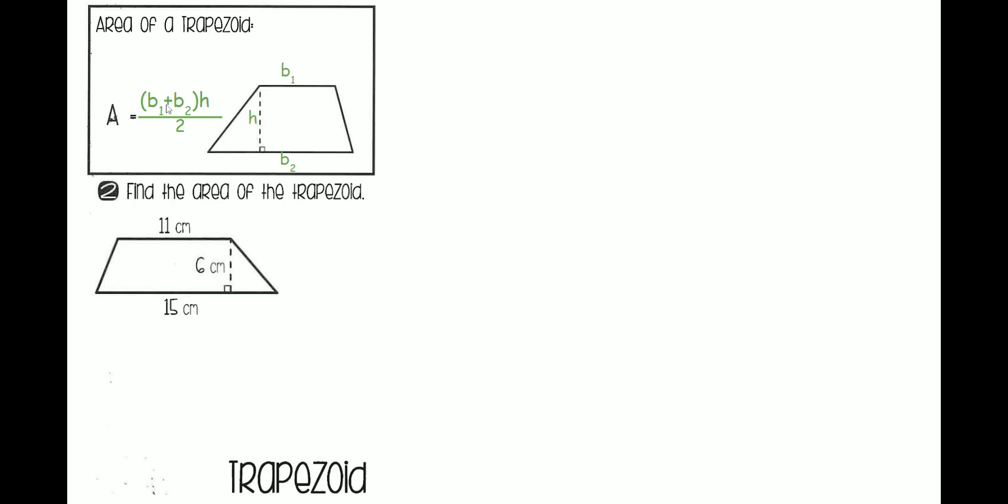And once you add those two and multiply by the height, you're just going to divide everything by 2. So let's try this example. I'm going to rewrite the formula. Area equals base 1 plus base 2 times height divided by 2. And let's fill in base 1 and base 2.